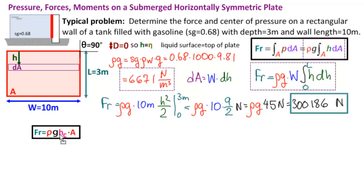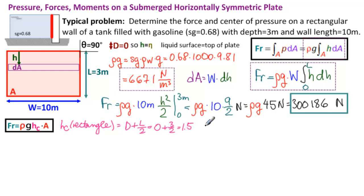Let's check our calculation with the centroid formula. So ρg is ρg. That's no problem. HC of a rectangle is equal to D plus L over 2. D is 0. L is 3. So 3 halves equal to 1.5 meters if you need the units. And then we have A equals the width times the length. So W times L equals 10 times 3 equal to 30. So that gives us FR is equal to ρg. 30 times 1.5 is 45 newtons, which is what we have. So we're good.